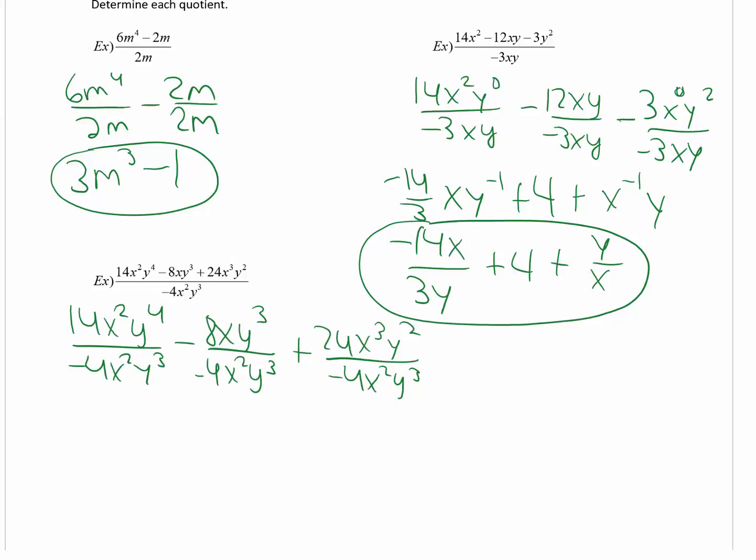Now let's simplify each part. So 14 and negative 4, I can divide out a common factor of 2. So that's negative 7 halves. Dividing out the x's, that leaves me with 1. And that's y to the 1st.